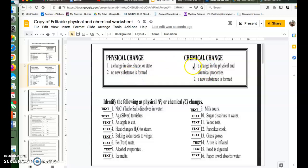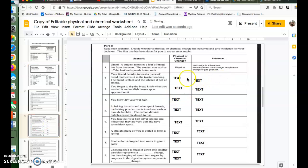So if you've decided that a physical change occurred, your evidence would be both of these: a change in shape or state has happened, no new substance is formed. If you decided that a chemical change has occurred, your evidence would be this right here, and you would type that into this box right here. You get one point for each of these, so both of them are important.